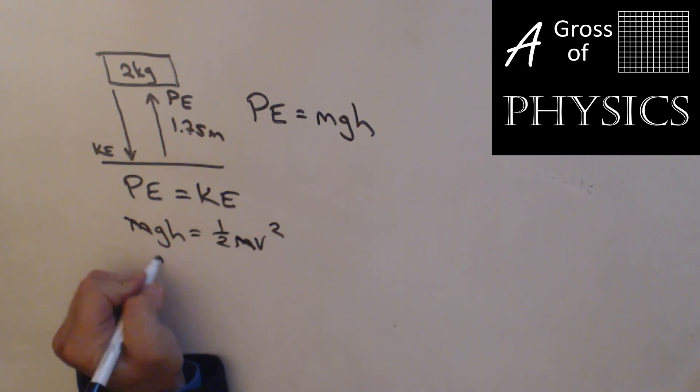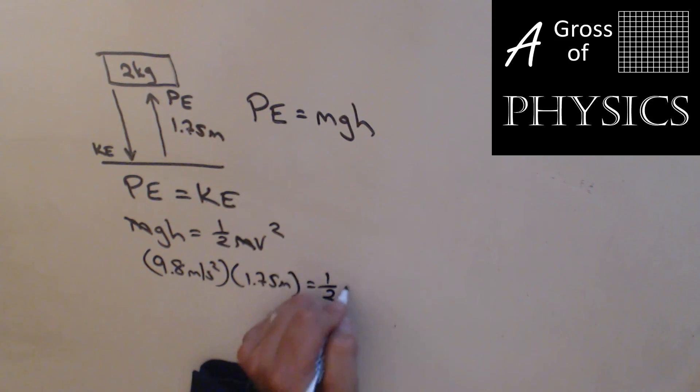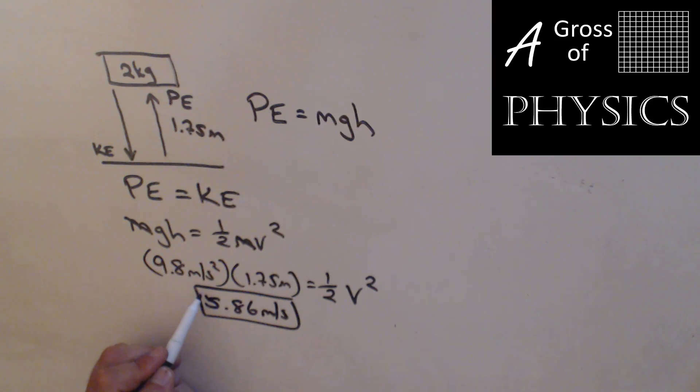Masses are irrelevant. 9.8 meters per second squared, 1.75 meters equals one-half V squared. So 9.8 times 1.75 divided by a half square root, and it's 5.86 meters per second. Now this is a speed, so it's positive. But if we were talking about a velocity, we know it'd be down, so negative. Now you can try to solve this the old school way, using VF squared minus VI squared equals 2AD, and you should come up with the same answer.